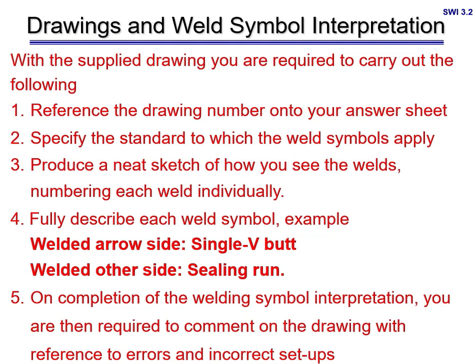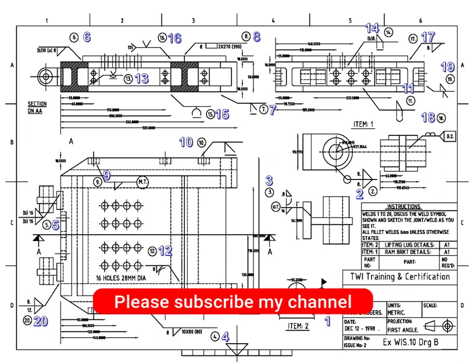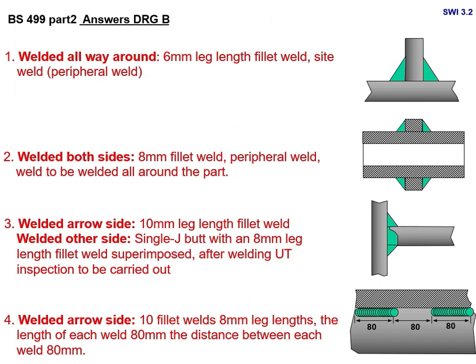Now let's understand what should be in the answer sheet. Looking at this drawing, I have clearly marked how many joints are there — one, two, three, four, five, six — total 20 joints. For joint number one, you have to interpret the joint and write it on the next page of the answer sheet. Joint 1 is: welded all the way around, 6 mm leg length fillet weld — a peripheral weld.